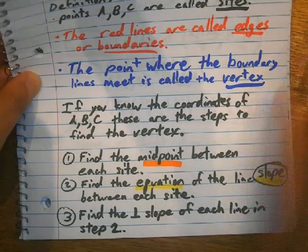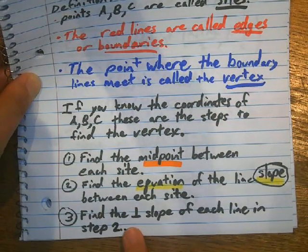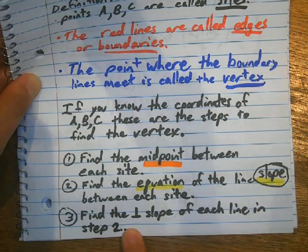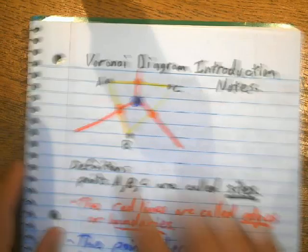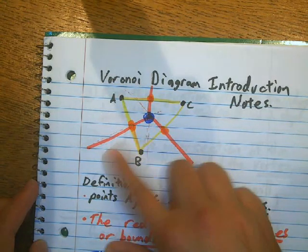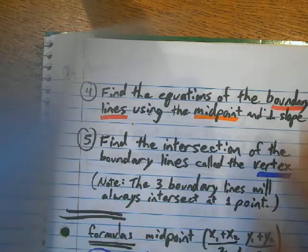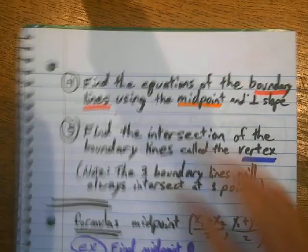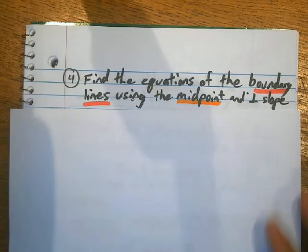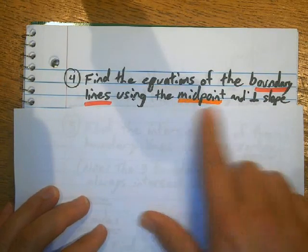Okay, once I have the slopes of those lines, I need to figure out what the perpendicular slope is going to be for those lines. Okay, once I have the perpendicular slope and the midpoint, I can find the equation of the boundary lines, those red lines. So, as I just said, the boundary lines can be found using the midpoint and the perpendicular slope.